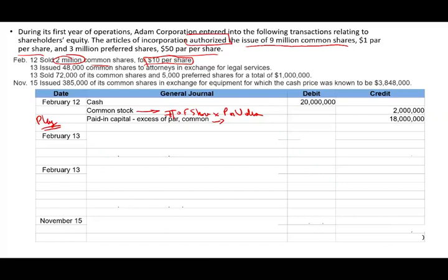February 13: we issued 48,000 common shares to attorneys in exchange for legal services. We didn't have cash to pay them, so instead we gave them 48,000 shares. They accepted the shares, and we recorded the expense. Assuming the stock price is still $10 (same as February 12), the legal expense is 48,000 shares × $10 = $480,000. We debit Legal Expense for $480,000.